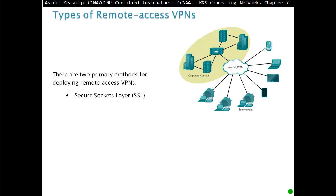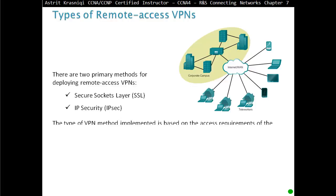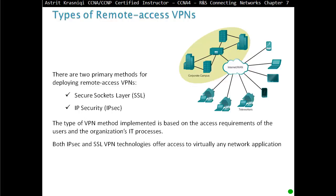There are two primary methods for deploying Remote Access VPNs: Secure Socket Layer, or SSL for short, or IP Security, IPSec. The type of VPN method implemented is based on the access requirements of the users and the organization's IT process. Both IPSec and SSL VPN technologies offer access to virtually any network application or resource.